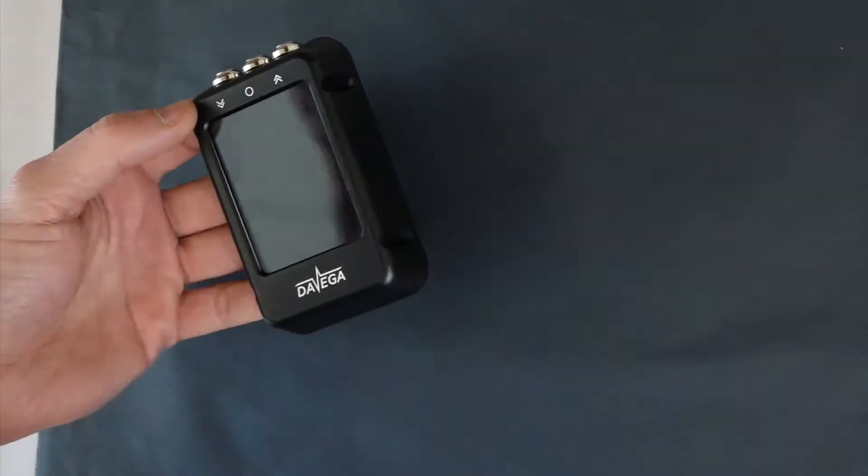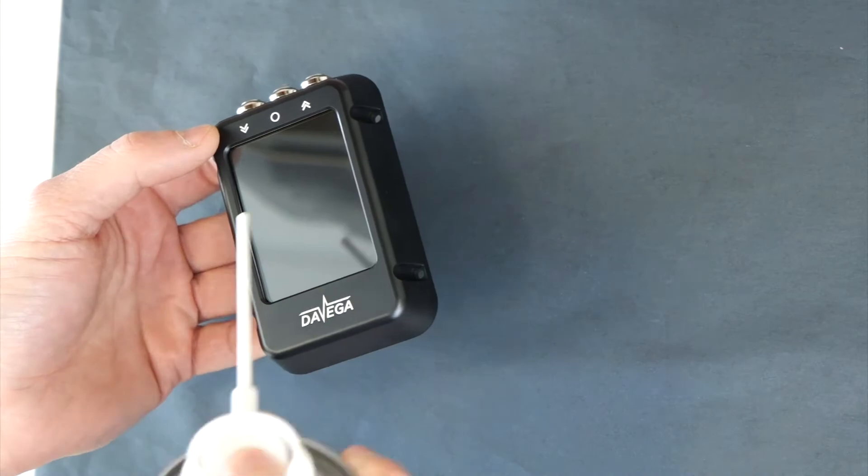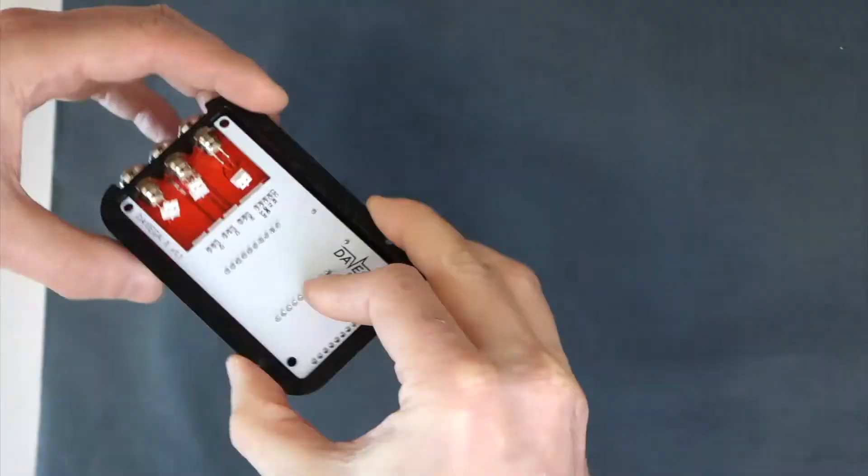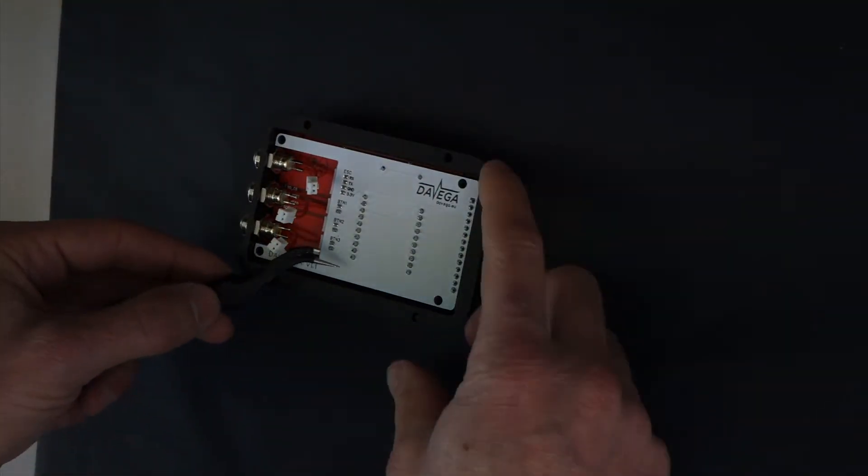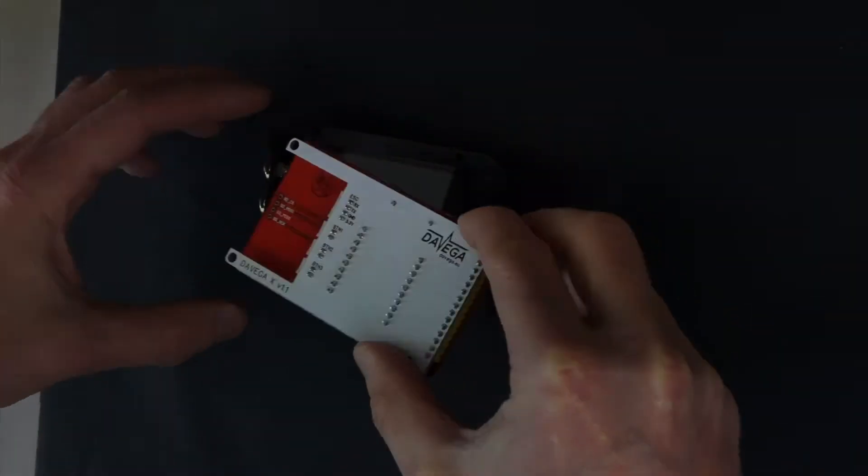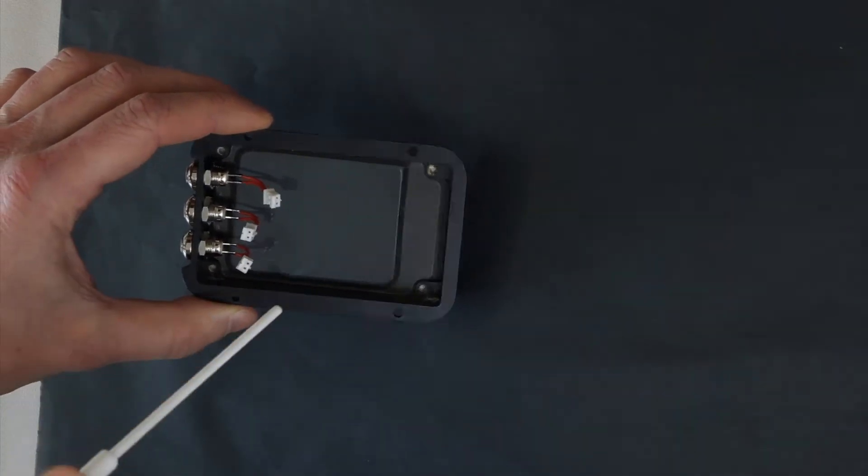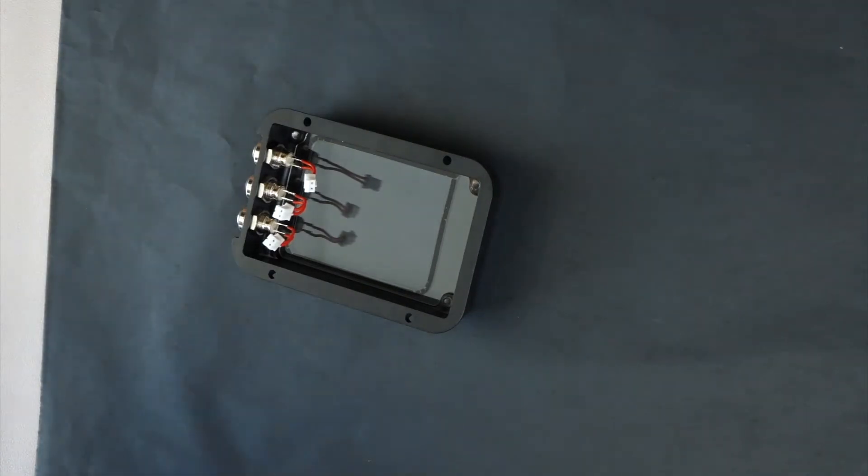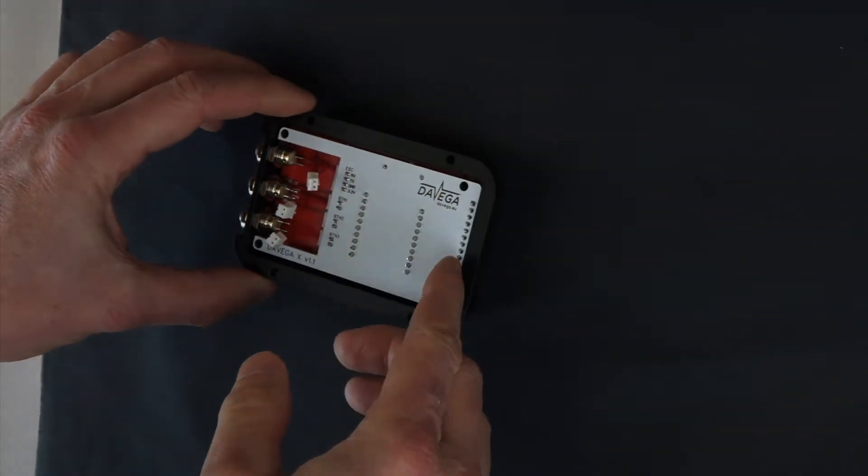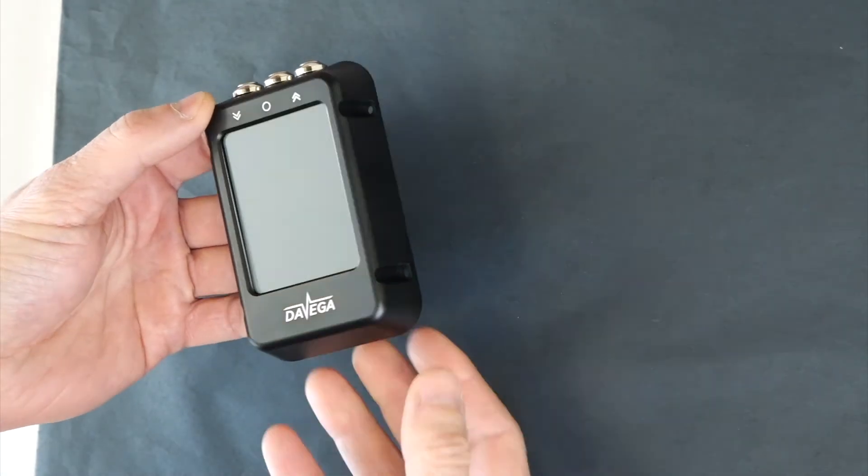Flip the housing over and check if there's any dust between the screen and the protector. If needed, carefully remove the electronics and do more cleaning. Then put the electronics back and recheck. Repeat until you are happy with the result.